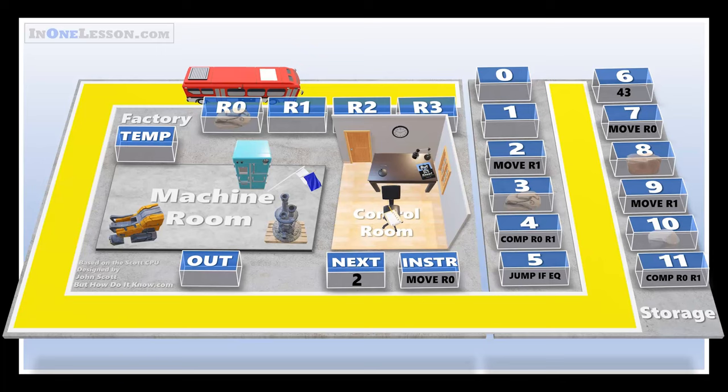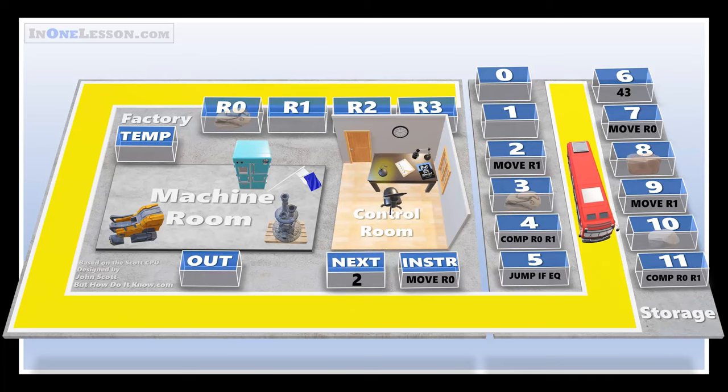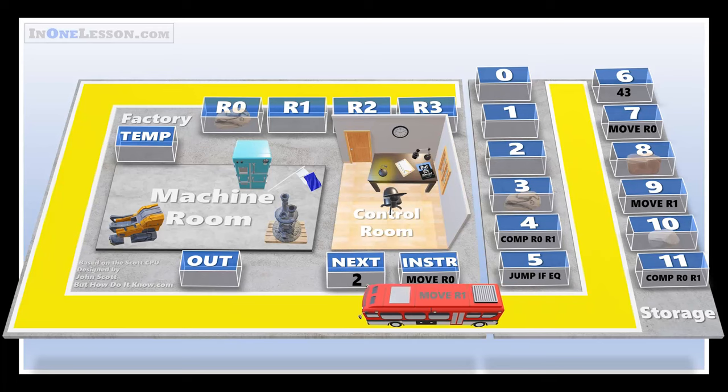Now the first instruction is over, and the boss starts the checklist again from the top. The boss makes a note of the number in the next container, and then radios the bus driver to fetch that instruction from storage. The boss writes down that instruction, and then adds one to the number in the next container.